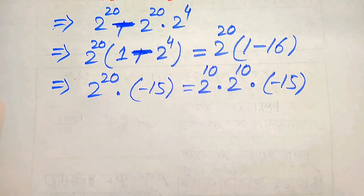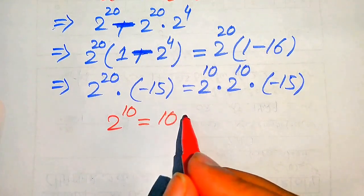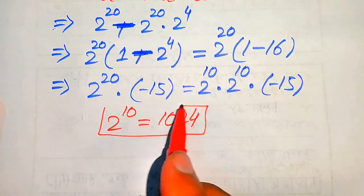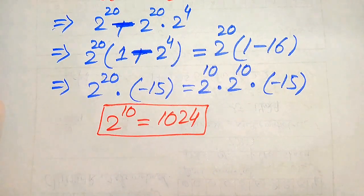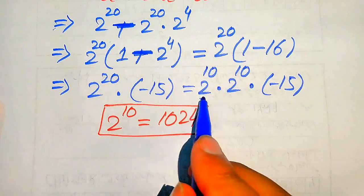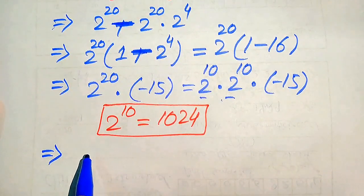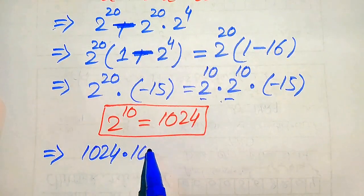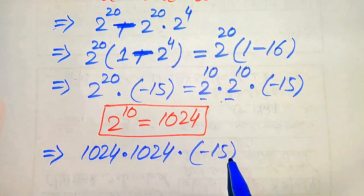We know that 2 to the power of 10 equals 1024, so we can get this value without using a calculator. We replace this value in both places, so after substituting, the expression becomes 1024 multiplied by 1024 multiplied by minus 15.